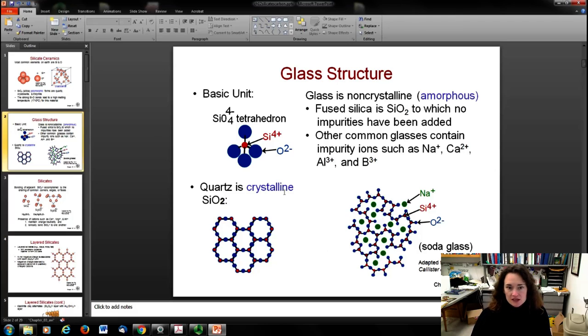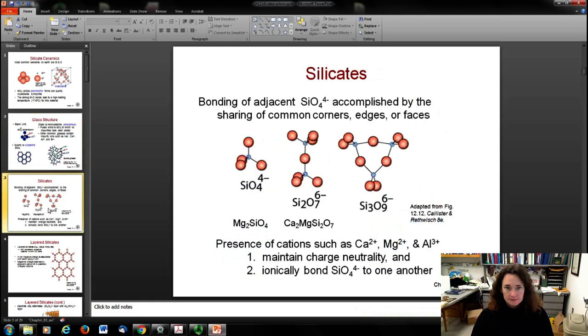Silicon doesn't have to form a crystalline structure. It can be non-crystalline or amorphous. In fact, glass is a non-crystalline or amorphous form of silicon where you have diffused silica with no impurities added. But you can also dope it with common impurity items like sodium, calcium, aluminum, and boron. For example, sodium silicon oxygen makes soda glass, a really common form of glass.